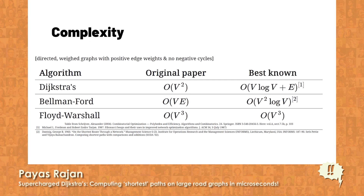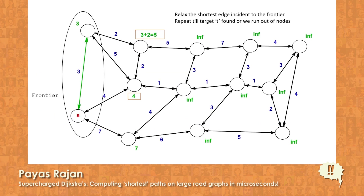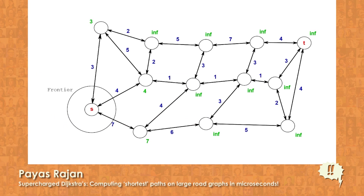We repeat this until the target T is found or we run out of nodes. The complexity of Dijkstra's algorithm is O(V²) from the original paper, but it has been improved over time — using Fibonacci heaps, the best known complexity is O(V log V + E). We can potentially do slightly better by searching from both the source and the target simultaneously. You develop one frontier from the source and another from the target, and wherever both frontiers meet you find the shortest path.